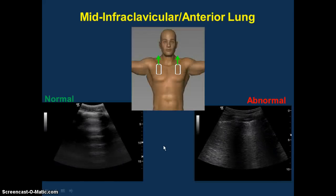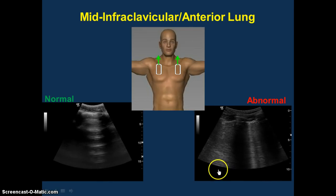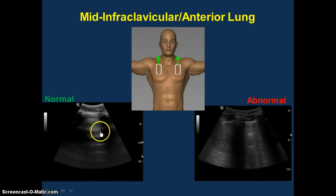Next, we're going to move the probe from the heart to look at the lungs. When you're looking at the lungs, it's important to realize that lung isn't going to look like lung. Your lung's going to have very much an artifact pattern to it, so you have to realize you're just interpreting lung artifacts.